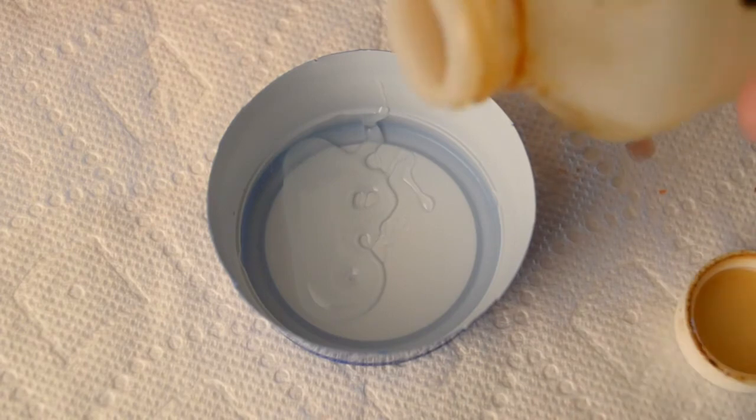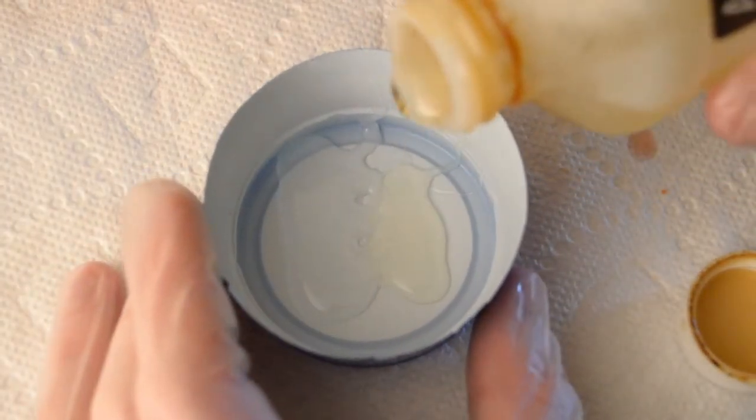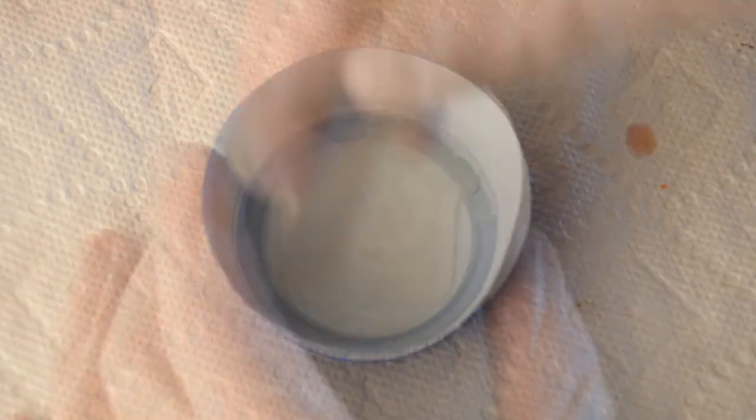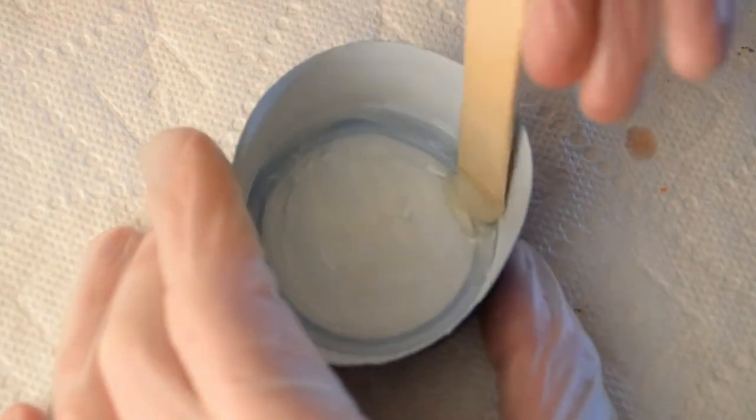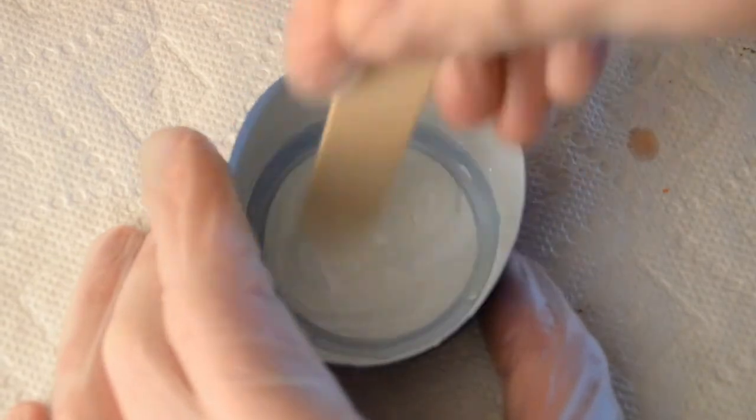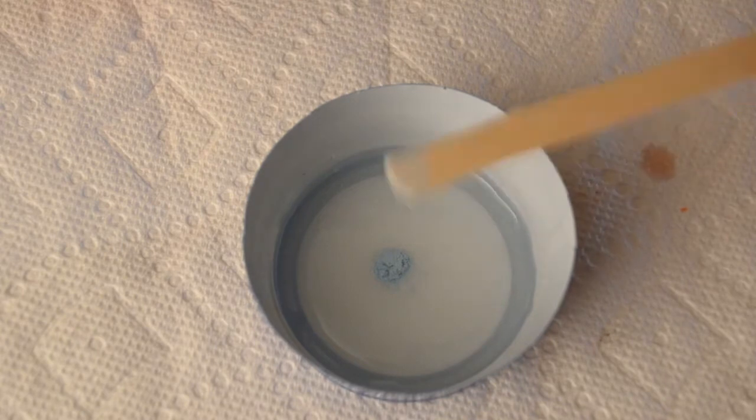I started by eyeballing both the resin and the hardener into the same container, which was a cut off solo cup. This resin is a 1 to 1 ratio, so it wasn't too difficult to just eyeball it. After I thoroughly mixed the parts together, I added a blue powdered pigment along with some blue glow powder for a bit of extra style.